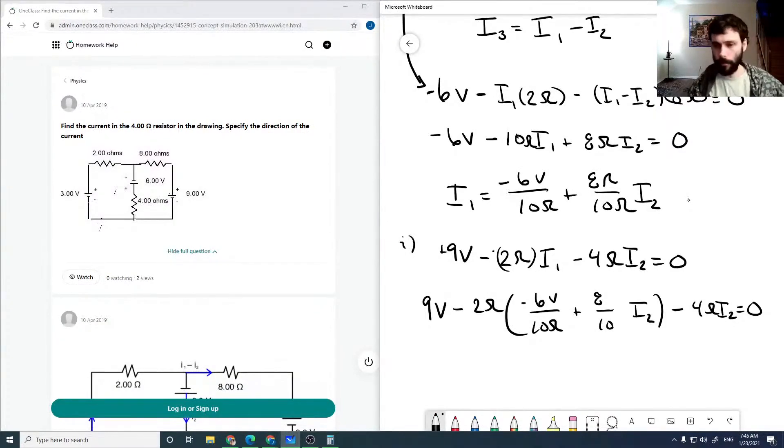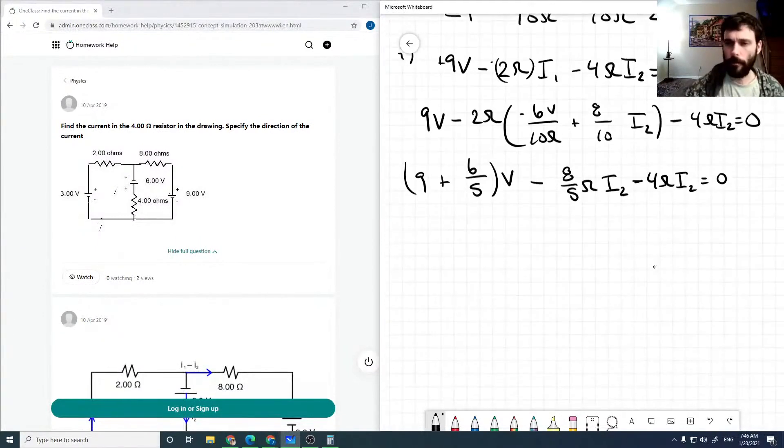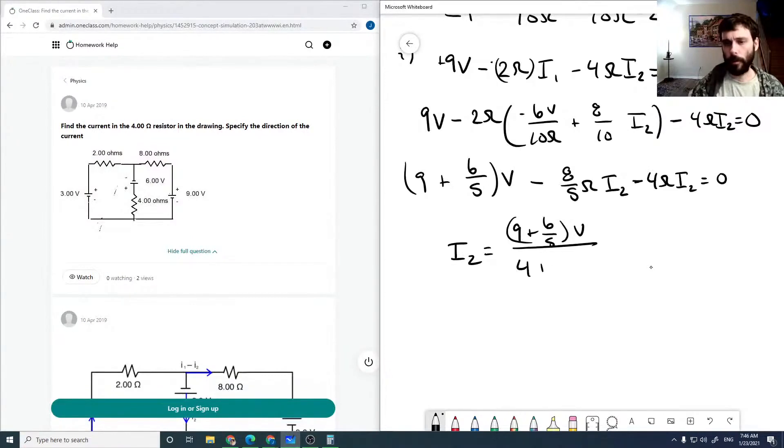So now that we have this, we can collect some terms here. So we've got 9 plus 6 over 5, so this becomes a plus, and they're all in volts, minus 8 over 5 ohms times I2 and then minus 4 ohms times I2 equals 0. We can now pull our I2 to the other side and rearrange. And so then I2 is 9 plus 6 over 5 volts over 4 plus 8 over 5 ohms, which is 10.2 volts over 5.6 ohms, which is 1.821 amps.